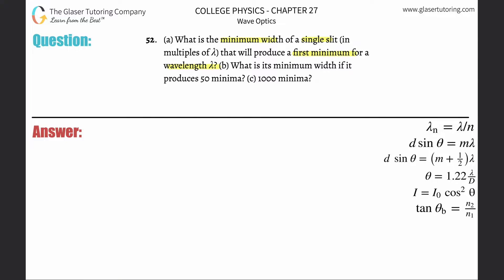Right. So basically, let's take this formula, d sine theta equals m lambda. Now, we're using that because we're talking about a single slit and minimum patterns. So this is the formula.